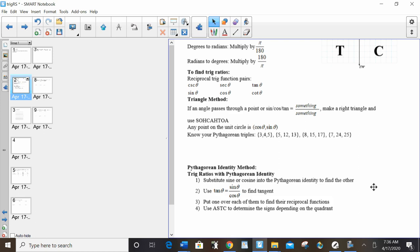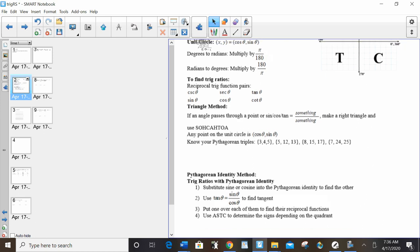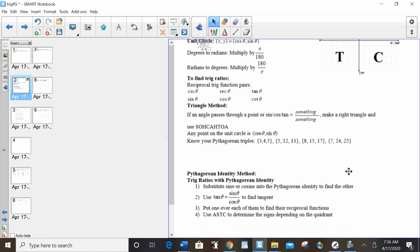Your other method, your Pythagorean identity method, they have to give you sine or cosine in order to use that one. We sub it into the Pythagorean identity. We use tangent equals sine over cosine to find tangent. From there, once we have our three regular trig functions, we put one over each of them to find their reciprocals, because by putting one on top, that's your reciprocals.